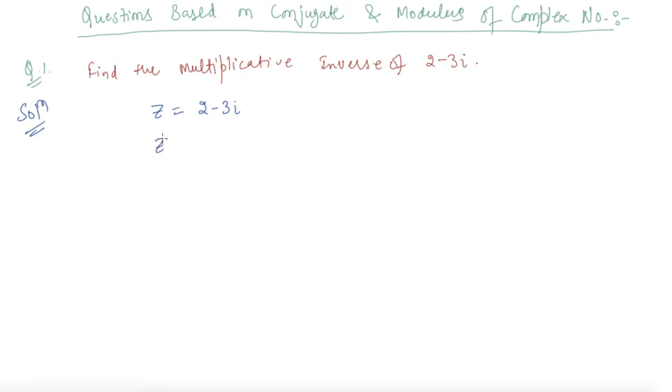So z bar will be 2 plus 3i, and mod z squared will equal z times z bar. These properties we discussed in the previous lecture. Or you can say this equals a squared plus b squared, where a is 2, so 4 plus 9 equals 13.